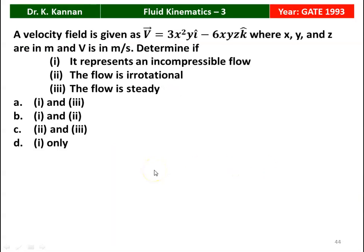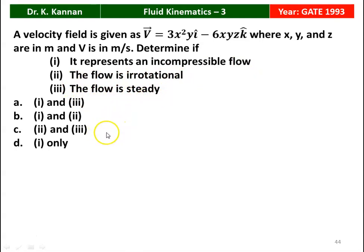The next question from the 1993 Question Paper: a velocity field is given by v⃗ = 3x²y î − 6xyz k̂, where x, y, z are in meters and velocity is in m/s. Determine which statements are true: (1) it represents incompressible flow, (2) the flow is irrotational, (3) the flow is steady. The correct answer is statements 1 and 3.